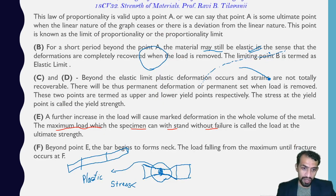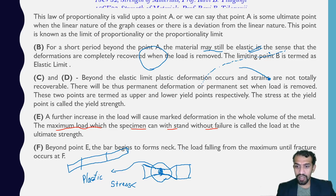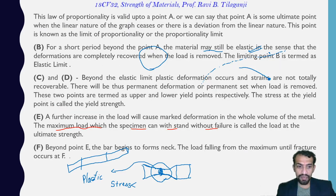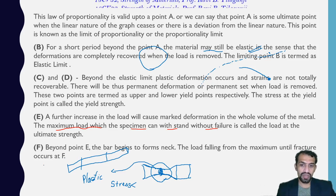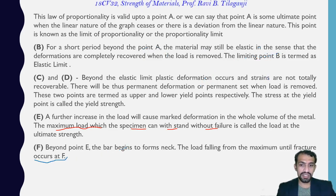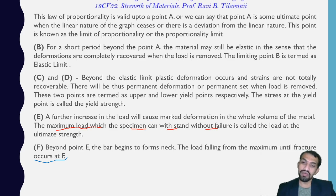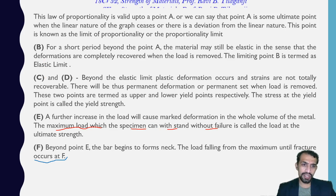Beyond point E, the bar begins to form a neck, and the load falls from the maximum until fracture occurs at point F. This was the stress-strain graph for mild steel. The points to remember are: A, B, C, D, E, and F.